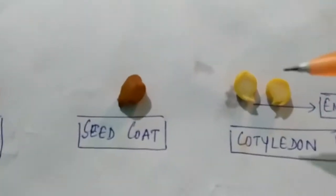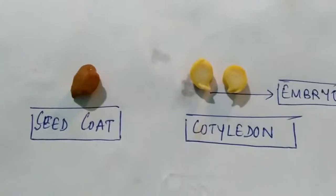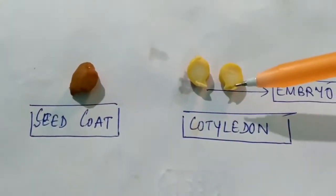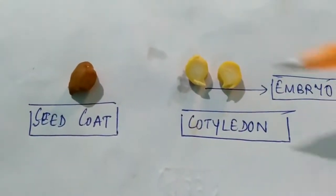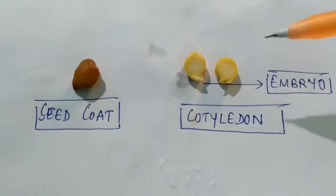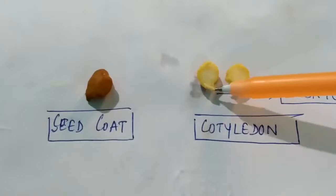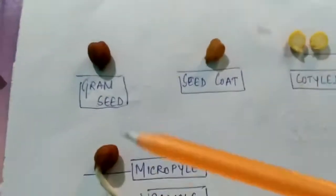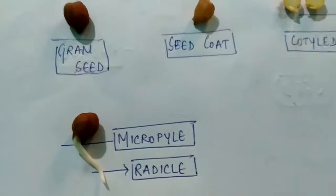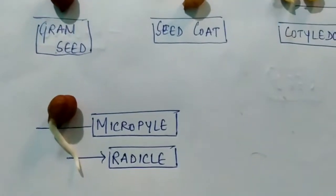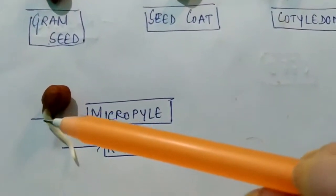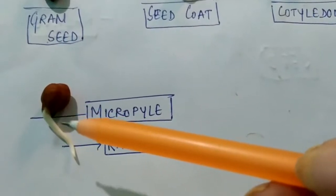Within the seed, the tiny embryo — I hope all of you can see — the tiny embryo present over here. This is the embryo which is present within this seed. This topmost portion is known as the micropyle. At the initial stage, this micropyle helps in the entry of water and also helps in gaseous exchange.